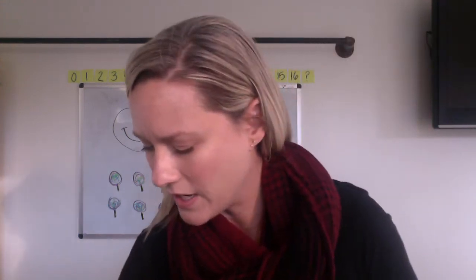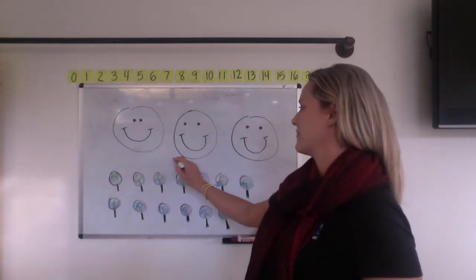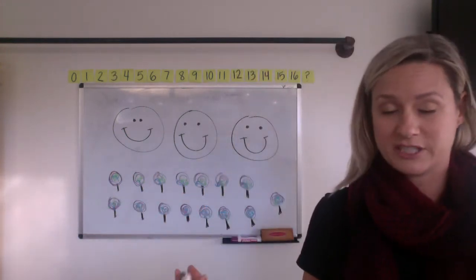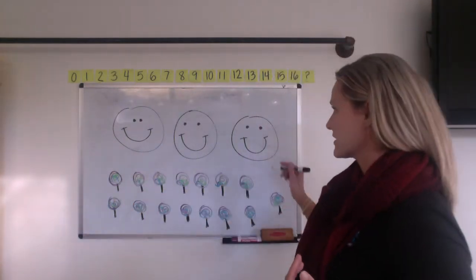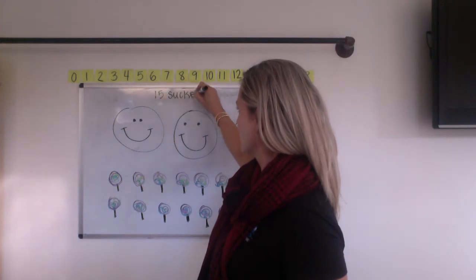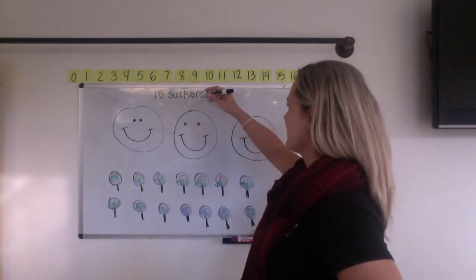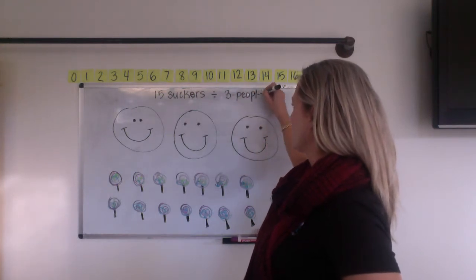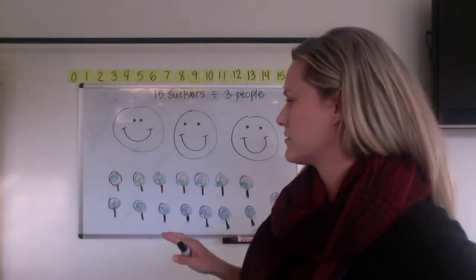So I see a lot of this stuff in class when we are working together. We'll go this one for you and this one for you and this one for you and you can draw lines right? It's basically like a connect the dot situation or you can start thinking about groups. So we've got 15 suckers, 15 suckers divided by, I'm going to use this symbol because that's the shared equally sign, 15 suckers divided by three people.